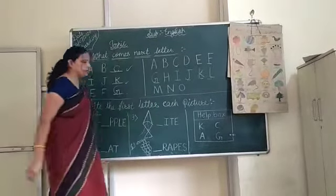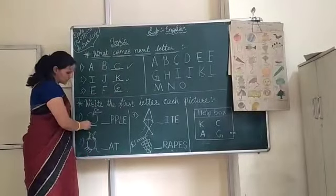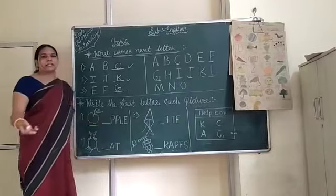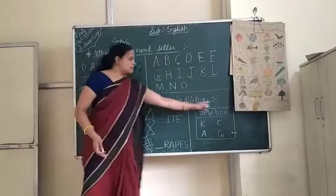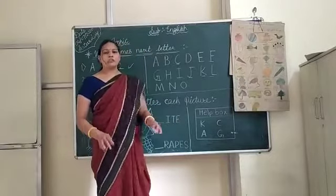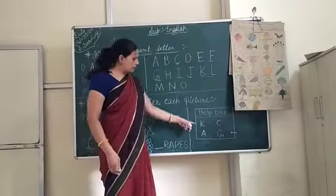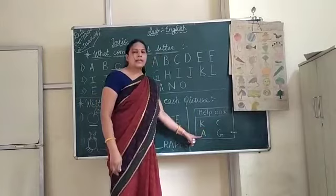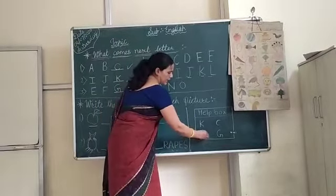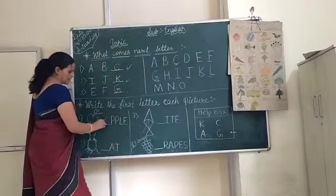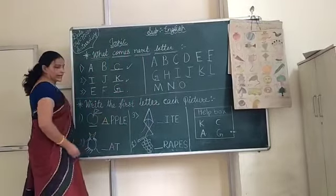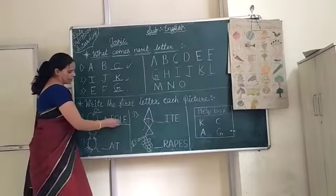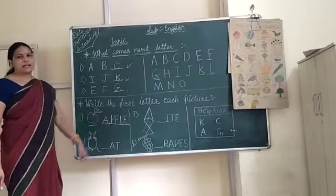The first picture is A for apple, but the A letter is missing here. So there is a help box. We find out where A is. Is this A letter? No. Is this? No. Is this? Yes, this is the right letter. A for apple. So I can place A letter here, and we speak the spelling: A, P, P, L, E. The complete spelling is there.